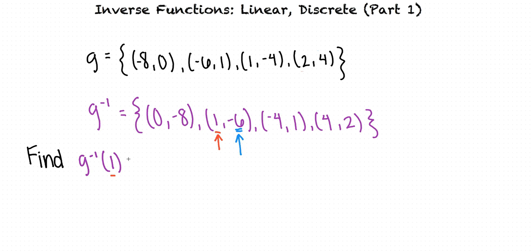Therefore when the domain value of the inverse function of g is one, the range value is negative six. So we can say that the inverse g of one is negative six.